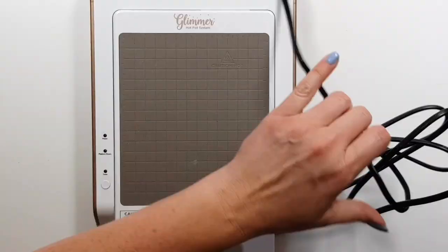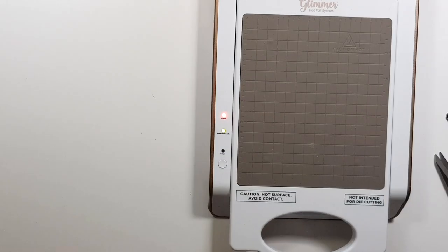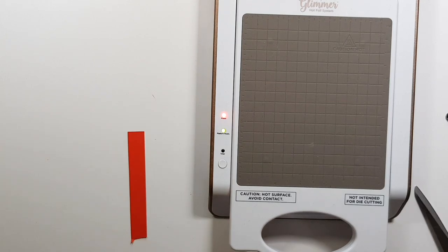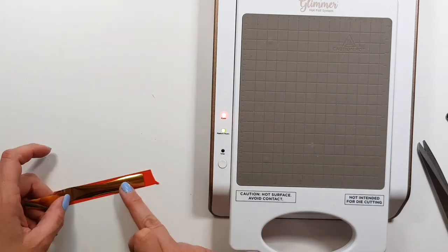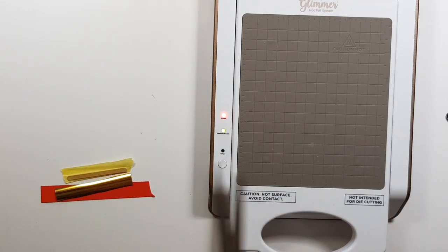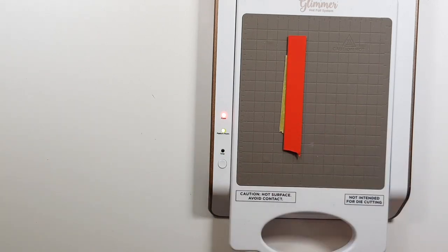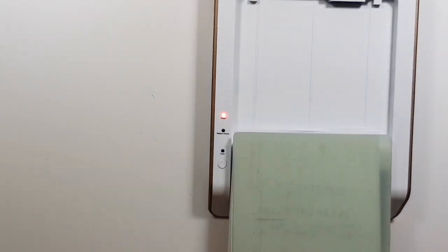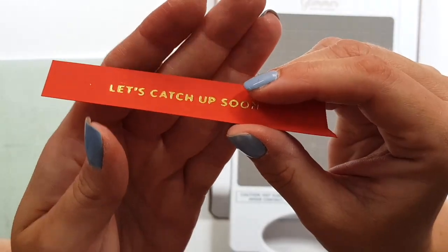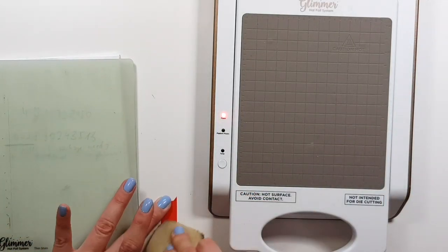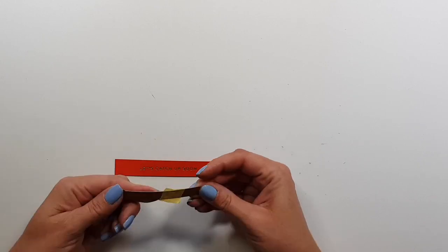Now this is not something I do very often actually, that I take out my glimmer machine just to foil one sentiment. Normally I foil a lot at a time so that I have them on hand when I need them. But in this case, I just needed it to be this particular shape that comes with the die kit. So I foiled this let's catch up soon and then I die cut it.